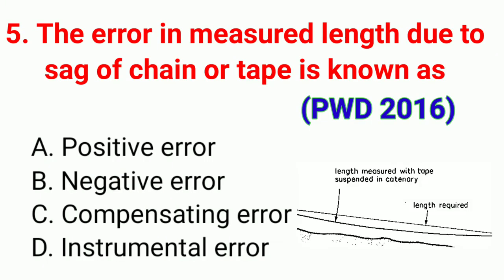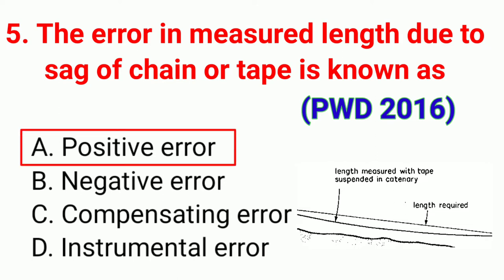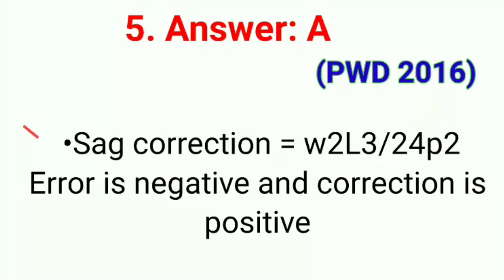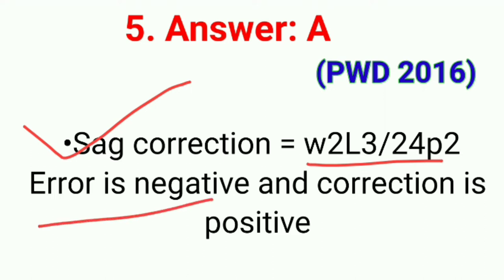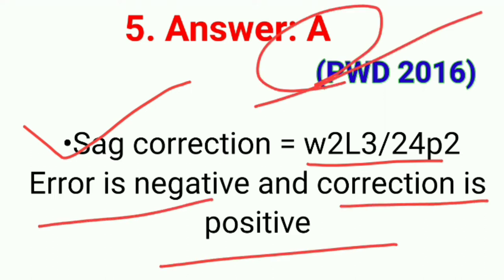Question number five: The error in measured length due to sag of chain or tape is known as. The correct answer is option A, positive error. The correction formula is W²L³ / 24P². The error is negative and correction is positive, so the answer is option A.